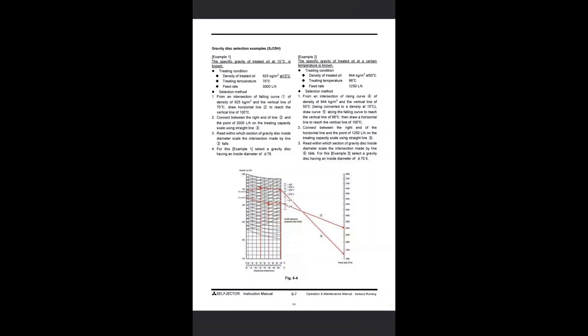Hello guys, welcome to the Clasor Orals MarineHub YouTube channel. Today we are going to discuss how to select the gravity disk for a purifier separation using a nomogram. A nomogram is a graph or chart given in the purifier manual. Here you can see the self-ejector purifier for the Mitsubishi model. We are also going to discuss how to plot the graph and select the gravity disk using the nomogram. Please subscribe to the channel as this video is going to be very helpful for people appearing for the Clasor Oral examinations.